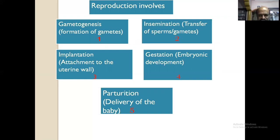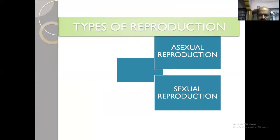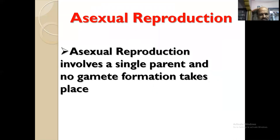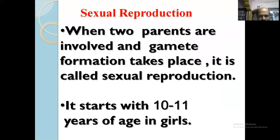Gestation is embryonic development — the complete development of the embryo from its conception to its delivery. The last step involved in reproduction is parturition. Parturition is the delivery of the baby from the mother's womb. This is a complete picture of reproduction involved in both human male and female. Asexual reproduction involves a single parent and no gamete formation takes place. When two parents are involved and gamete formation takes place, it is called sexual reproduction.